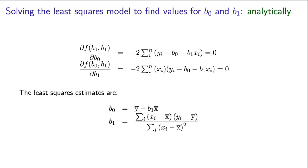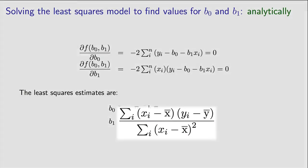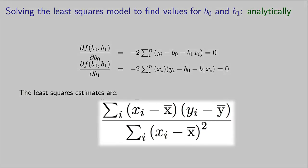It is not hard to prove that b0 is equal to the average y-value minus b1 times the average value of x. But we need a value for b1. b1 is equal to the summation in the numerator, x minus x-bar multiplied by y minus y-bar, and in the denominator, we have the sum of x minus x-bar squared.